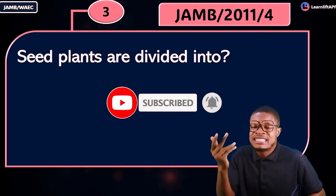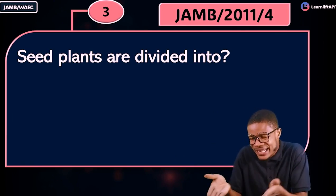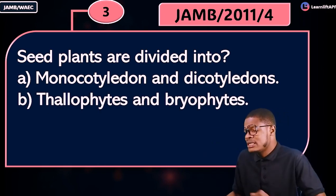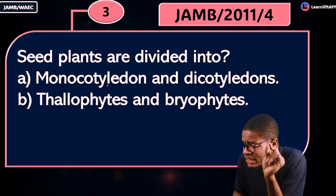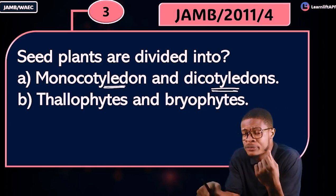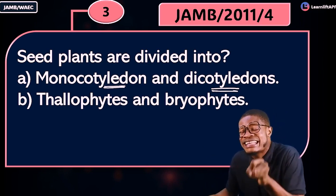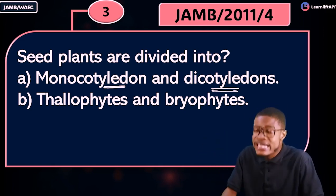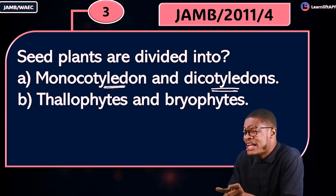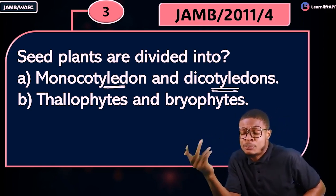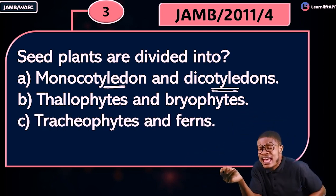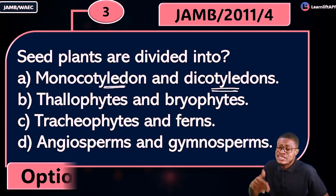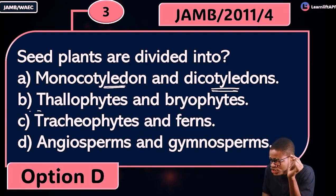JAMB 2011 question 4 asked: seed plants are divided into what? Option A: monocotyledons and dicotyledons. Option B: thallophyta and bryophyta. Option C: trachophytes and ferns. Option D: angiosperms and gymnosperms. Note that monocotyledons and dicotyledons are divisions under angiosperms specifically. Thallophyta and bryophyta use spores, not seeds. The correct answer is option D: angiosperms and gymnosperms.